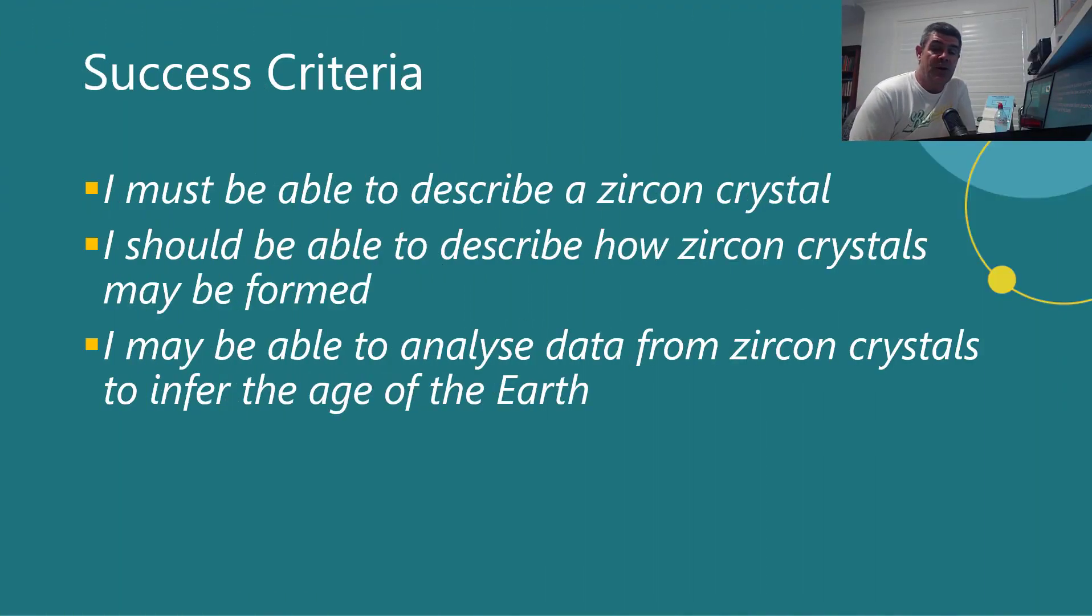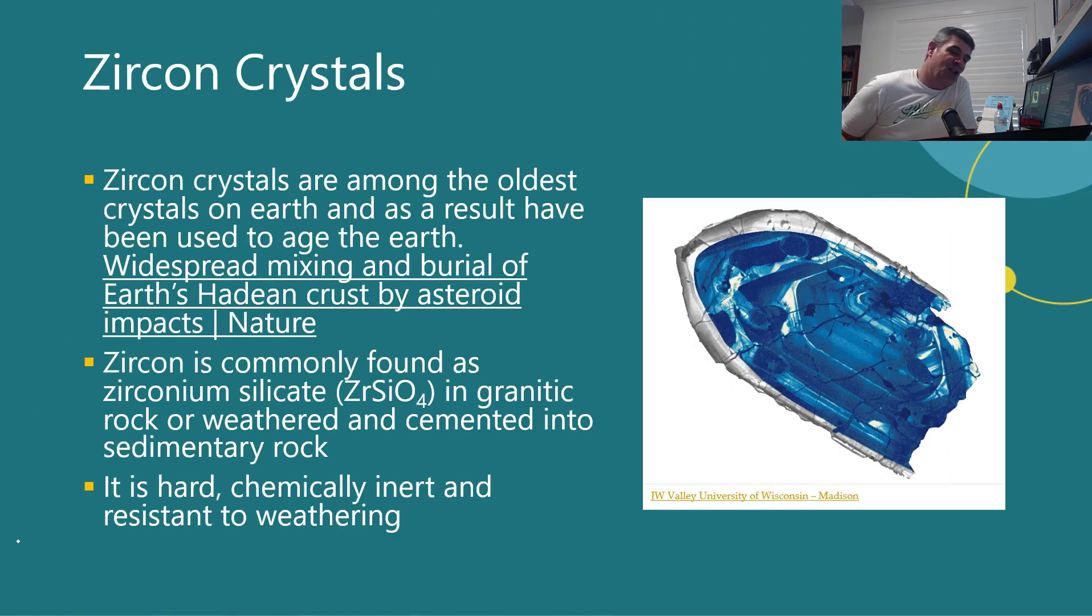So you need to be able to describe what a zircon crystal is and how they might be formed, and to infer from that what we can conclude about the age of the Earth from zircon crystals. So we don't know a lot about zircon crystals, but we do know they are amongst the oldest crystals on Earth, and as a result, they've been used to age the oldest parts of the Earth.